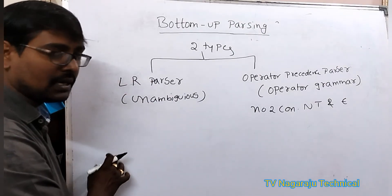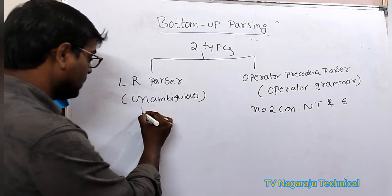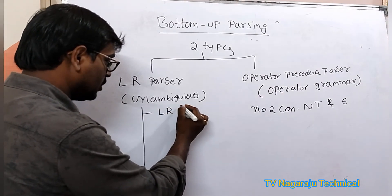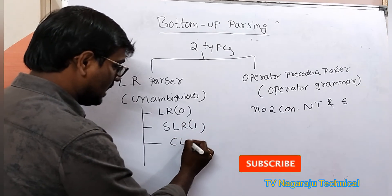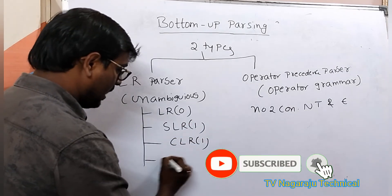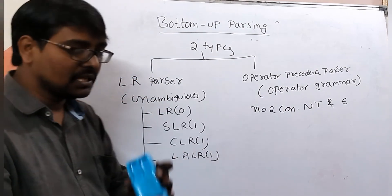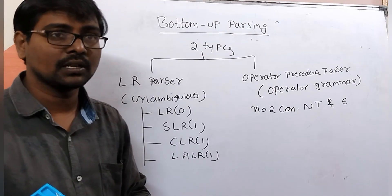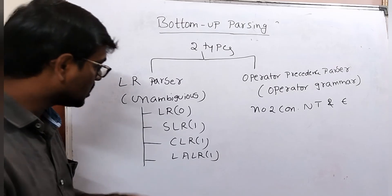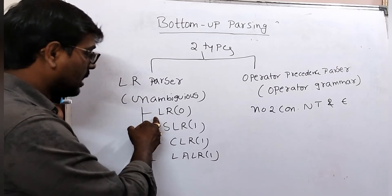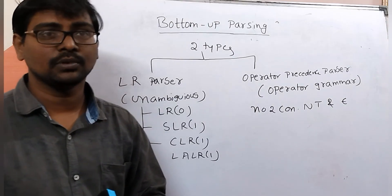The LR parser is again classified into different types: LR(0), SLR(1), CLR(1), and LALR(1). This is the basic division of bottom-up parsing and its classifications. In the next sessions, we will discuss one by one: LR, SLR, CLR, LALR, and operator precedence grammars with examples. Thank you.